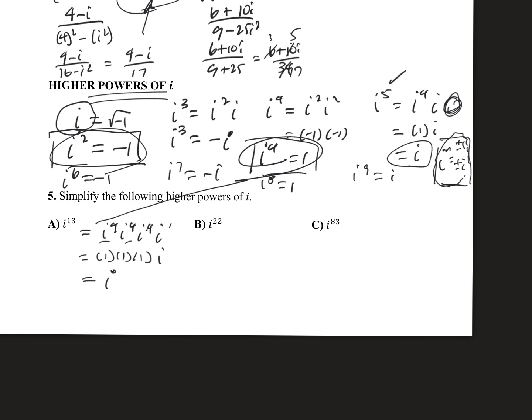And same thing, i to the 22nd. We can rewrite i to the fourth to the fifth power is i to the 20th. I'm just utilizing some exponential rules. So this becomes i to the fourth to the fifth power. There's 22 of them, so we have i squared. So this is essentially 1 to the fifth power, and this is negative 1. So i to the 22nd power is negative 1.